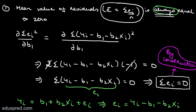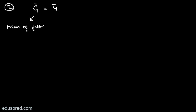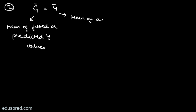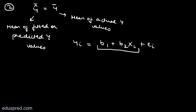The second useful result is ŷ-bar equal to y-bar — that is, the mean of fitted or predicted y values equals the mean of actual y values. To see why, recall that our sample regression equation is yi = b1 + b2*xi + ei, where the term b1 + b2*xi is nothing but ŷi. So we can write yi = ŷi + ei.